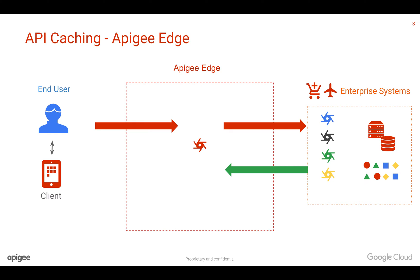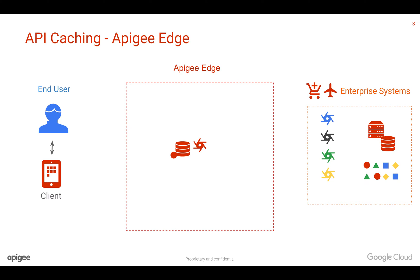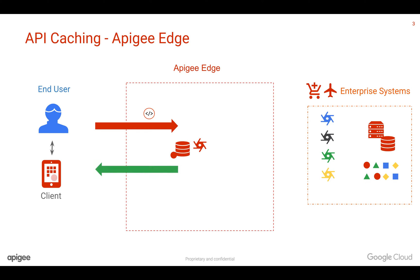In the response flow, we can use policies to capture this data into the Apigee Edge Cache layer and then give back the response to the client. Next time, whenever an API call comes to Apigee Edge, Apigee can find out the information is already existing in the cache and return the data to the client within a few milliseconds. Therefore, we can improve the speed of the API.